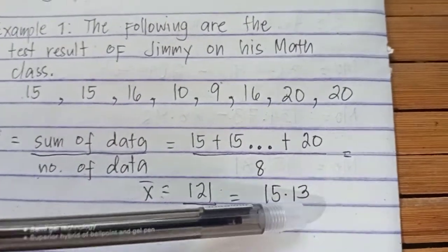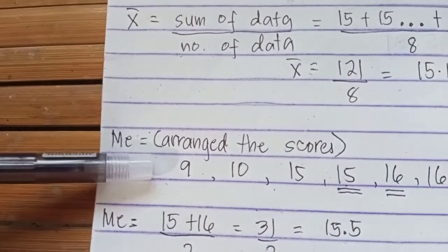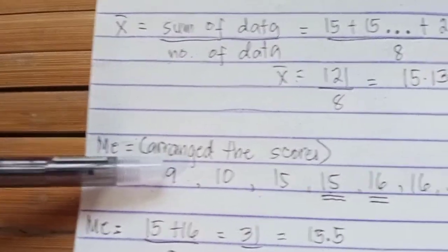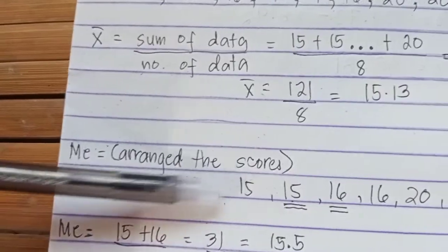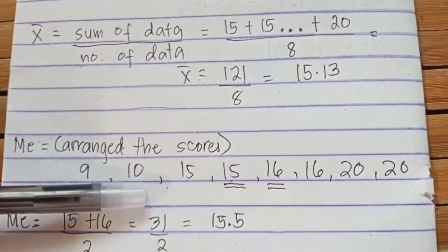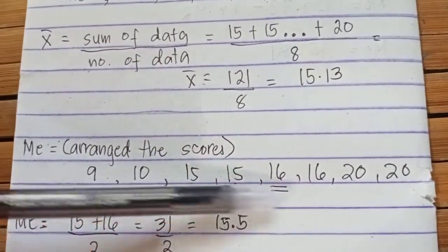Next is the median. Median refers to the middle value. To locate the middle value, simply arrange the scores in ascending or descending order. This is now the result of the arrangement.